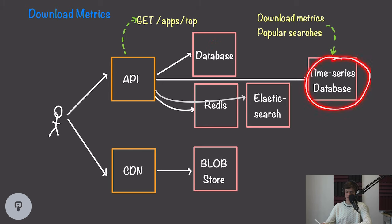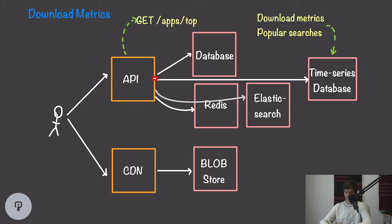Once we have this time series database in place, users can request from the API to get, for example, the list of top apps, and the API gathers this data from the time series database. That concludes our high-level overview of this system. There are many areas to dive deeper into, such as how the database would be sharded and replicated, how the data model would be structured in both the metadata and time series databases, and other aspects like the process of uploading and reviewing an application, which would add significant additional complexity.